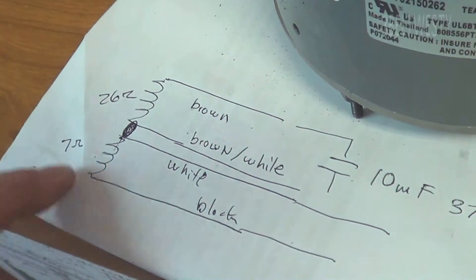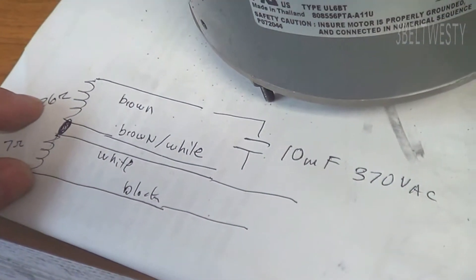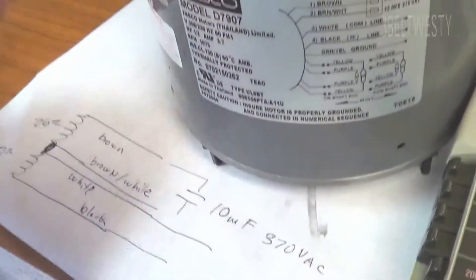It's about 7 ohms white to black. Brown to brown white is 26. The Fasco 7907, that's on a brand new motor.